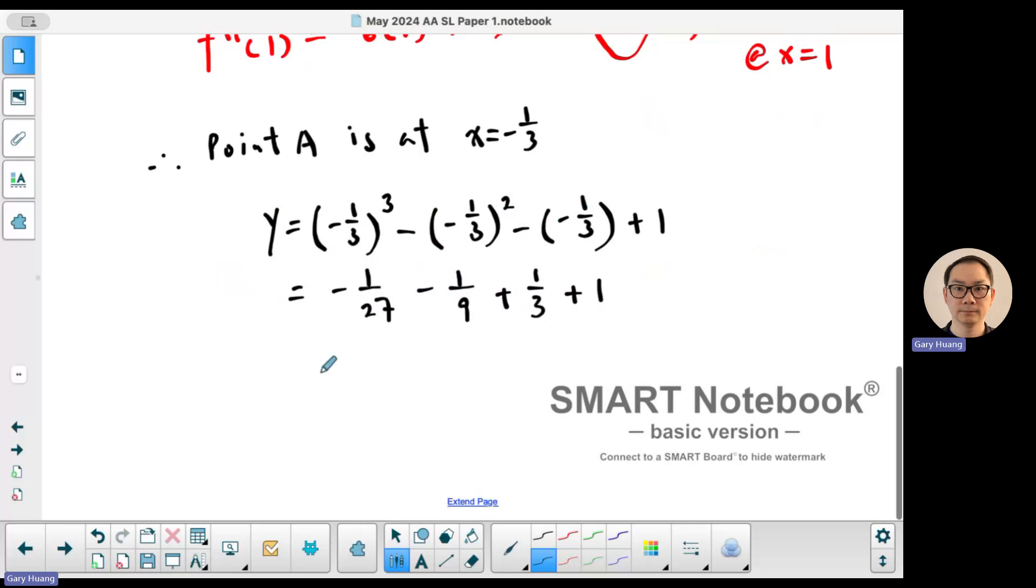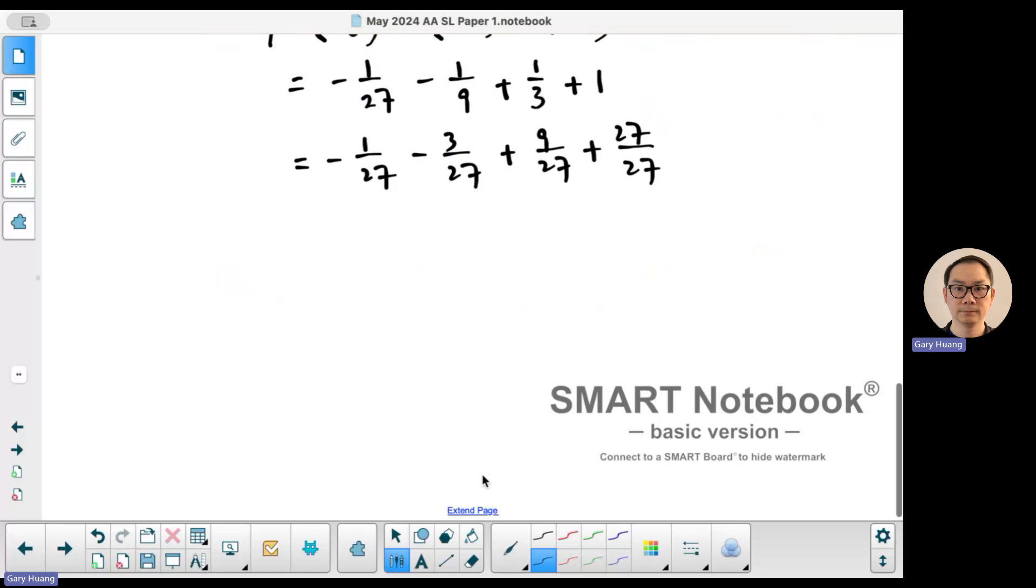Make the same common denominator of 27. This is 3, this is 9, and that's 27/27. Add them up. You're going to get -4 + 5, so 32/27. So therefore point A is (-1/3, 32/27).